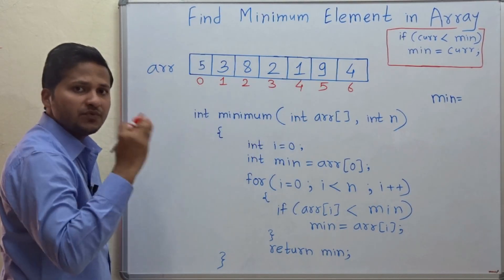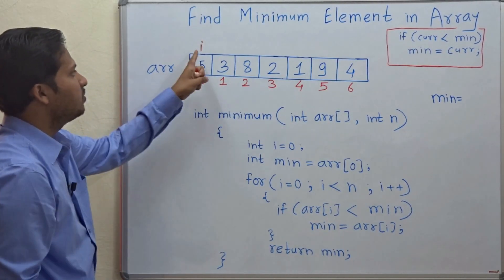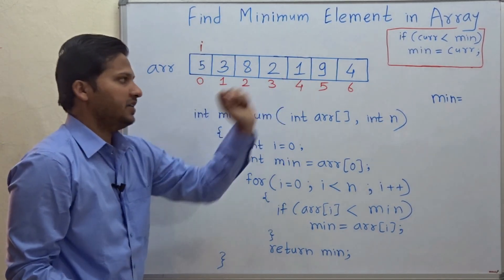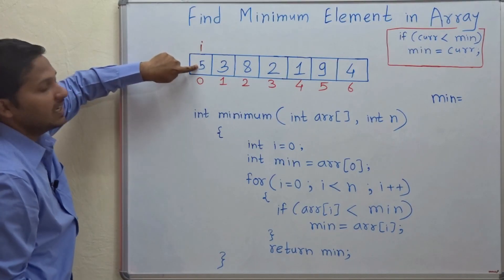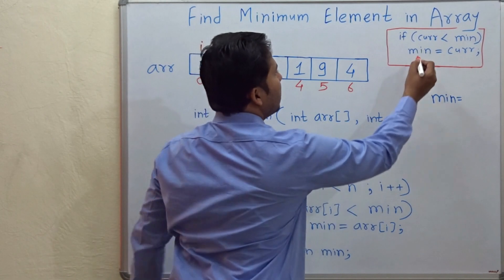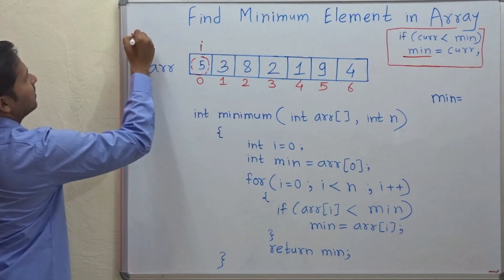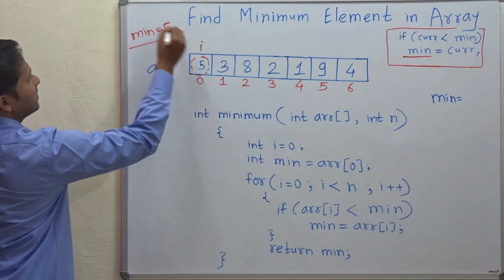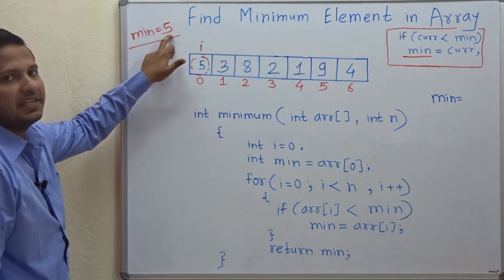The logic is very simple. You have to trace the array by using variable i, meaning you have to visit every element in this array, and the ith element is the current element. First, you have to declare the minimum element as the first element in the array. So minimum will become 5 in this case — the first element is the minimum.